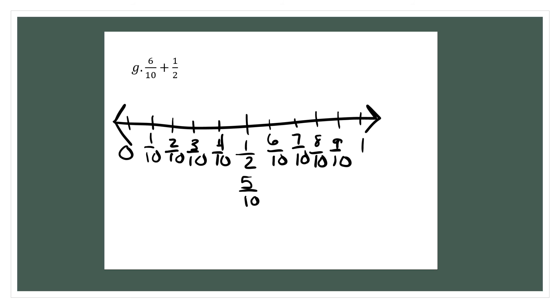So to add on our number line, we're going to start on 1 half and bump up 6 tenths. So I'm going to bump up 1, 2, 3, 4, 5 and I realize I need 1 more. So I'm going to add on 1 more, so I'd have 1 and 1 tenth.